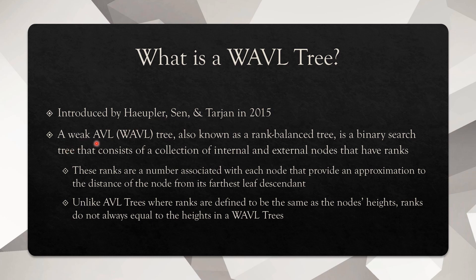A weak AVL tree, also known as a Waffle Tree or rank balance tree, is a binary search tree that consists of a collection of internal and external nodes that have ranks. Since it is a binary search tree, it holds all the same properties as a binary search tree — all left children have keys less than the parent node's key, and right children have keys greater than the parent node's key. If you do an in-order traversal of this tree, you get the nodes in sorted order by key. External nodes are just leaf nodes, and internal nodes are non-leaf nodes.